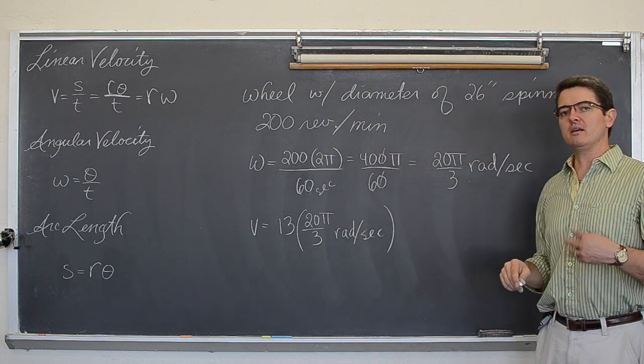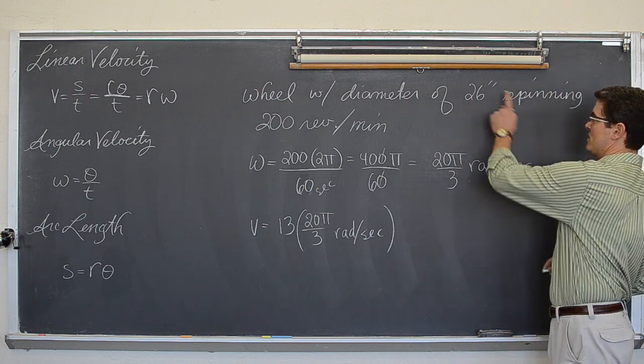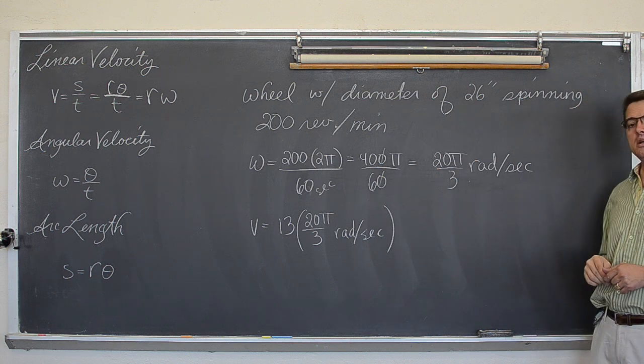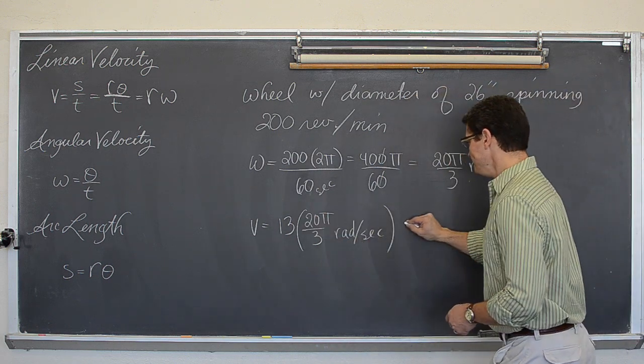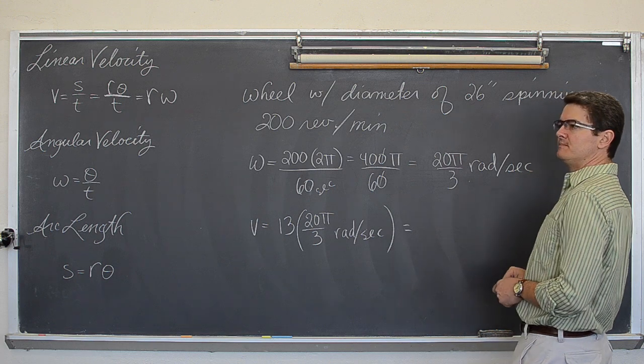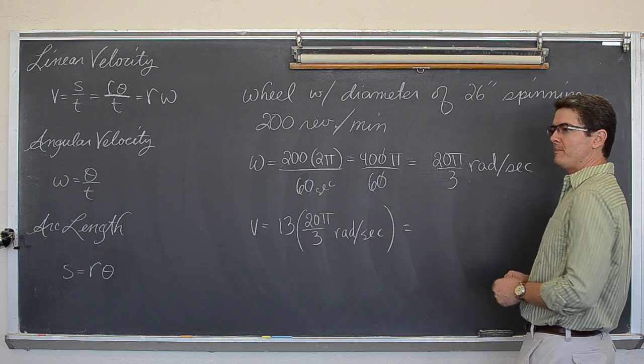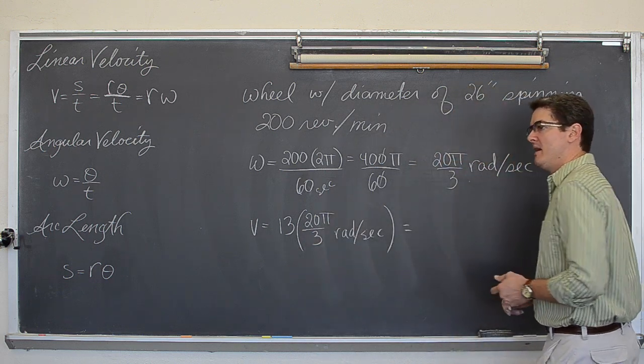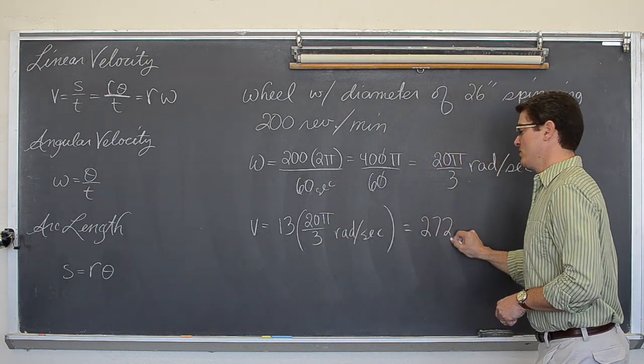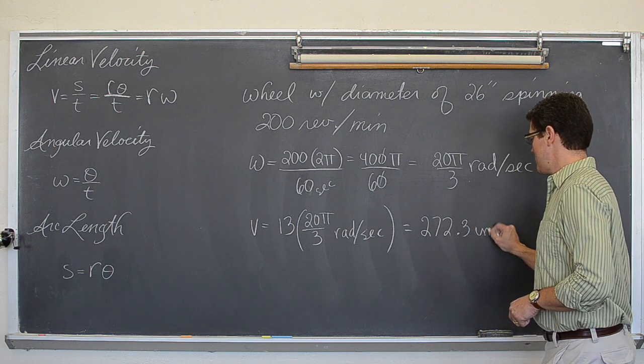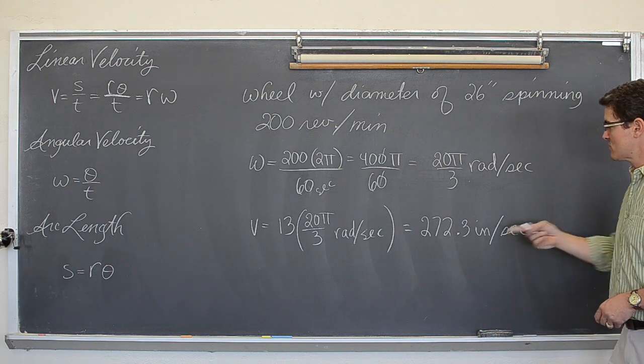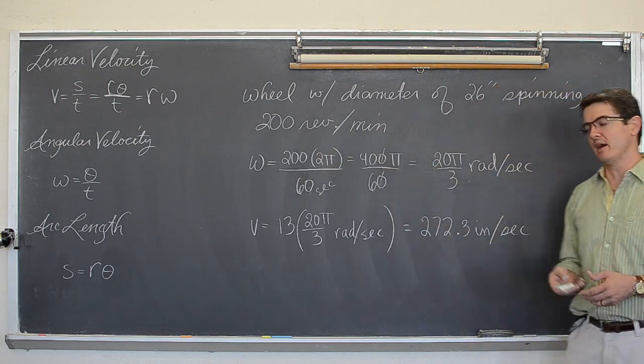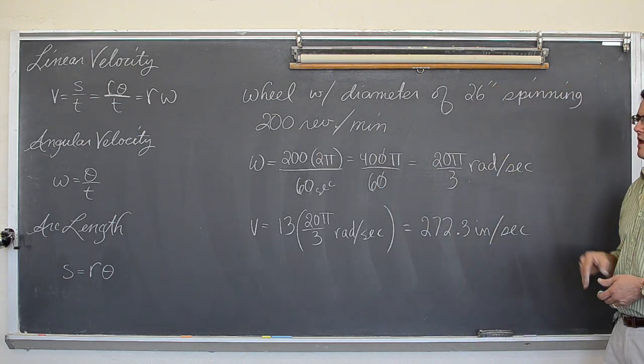So, we are going to have a linear velocity per second. How many inches the tip of that spoke on the outside of the wheel travels in a one second period. So, that is going to be, did I work this out as a decimal? Yup. So, 13 times 20 divided by 3 and then multiply that by π comes out to be 272.3 inches per second. Which is a pretty good distance over a one second period. But then 200 revolutions a minute is pretty quick. So, angular and linear velocity of the wheel.